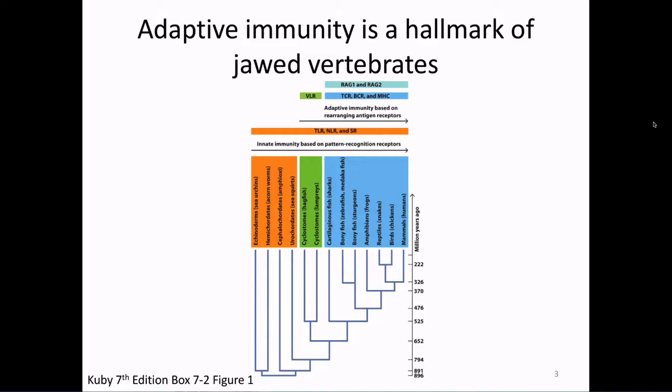This process of VDJ recombination is found in all jawed vertebrates. When we think about the evolution of the immune system, about 500–550 million years ago, when the jawed vertebrates started to arrive, those organisms suddenly had an adaptive immune system that nobody else had. Sometimes it's referred to as the immunological big bang.